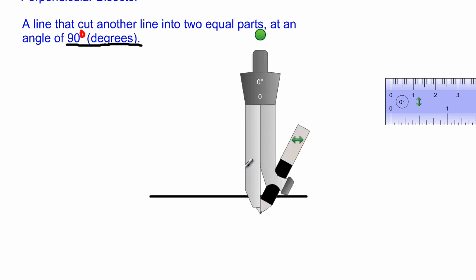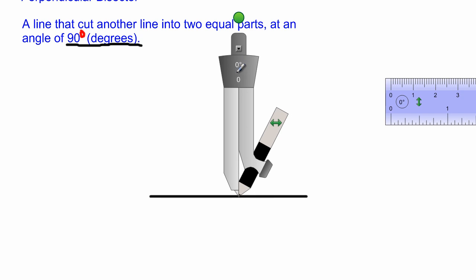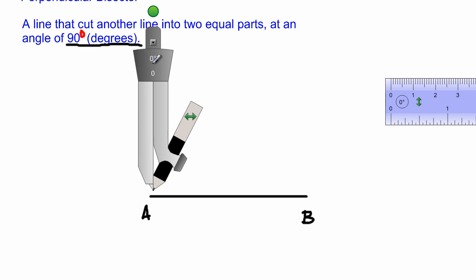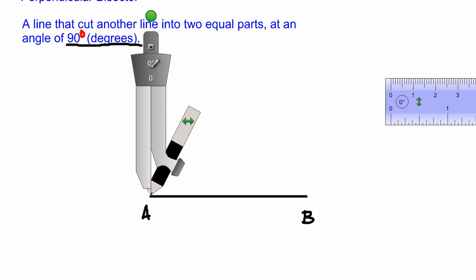Now what I'll be doing, I'm going to take out my compass and I'm going to place my compass. Let's give this line segment a name. Let's call this line segment AB.